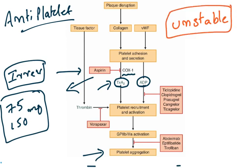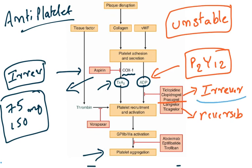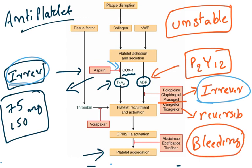ADP acts on receptors known as P2Y12 receptors, which are G-protein coupled receptors present on platelet cells. ADP binds with them and activation occurs. These receptors are blocked by two classes of drugs: ticlopidine, clopidogrel, and prasugrel irreversibly inhibit these receptors, whereas cangrelor and ticagrelor block the receptors reversibly. Irreversible inhibition completely destroys the receptors, which may result in profuse bleeding — the major side effect of all antiplatelet agents. Reversible agents are somewhat safer.